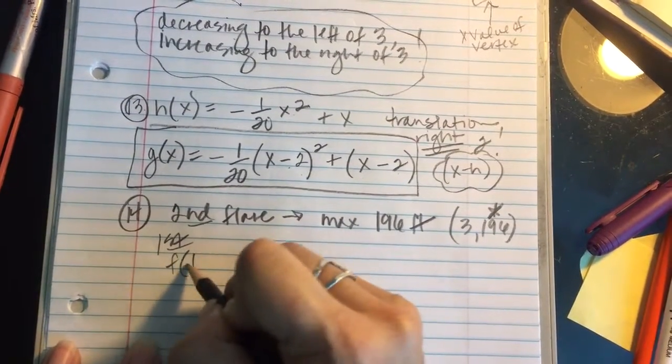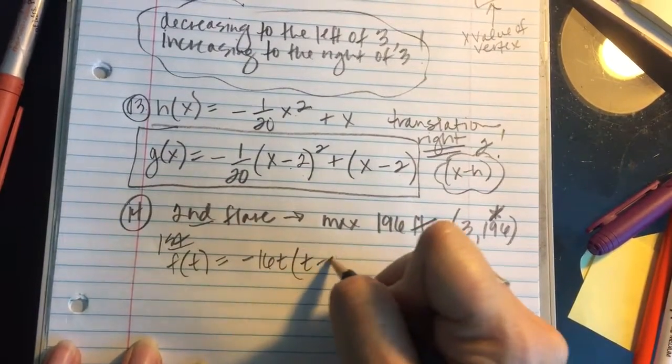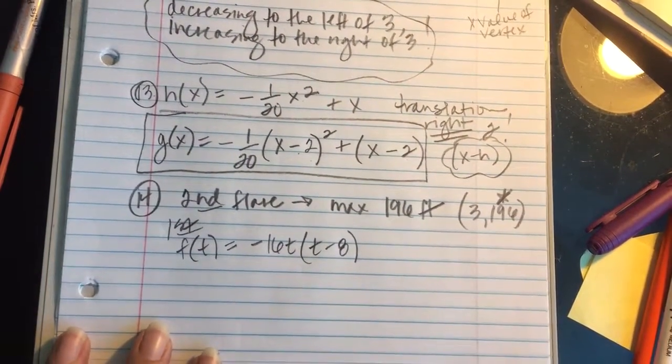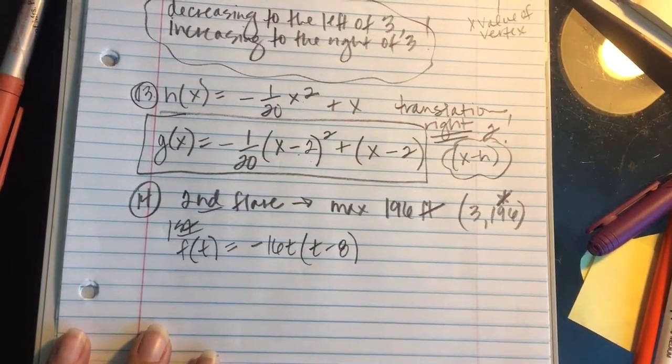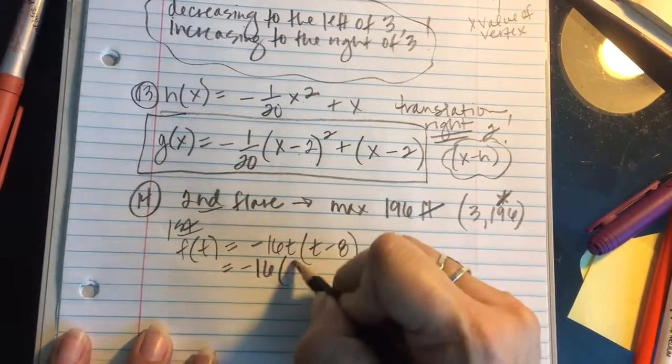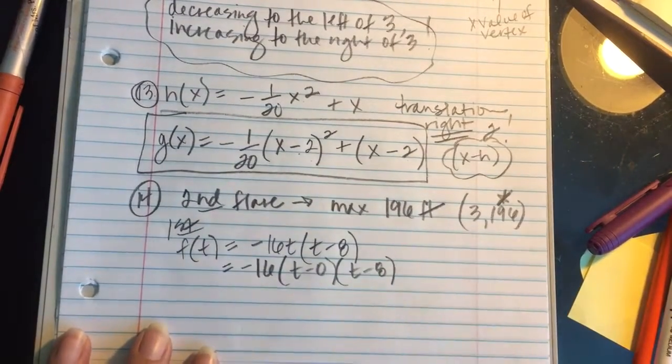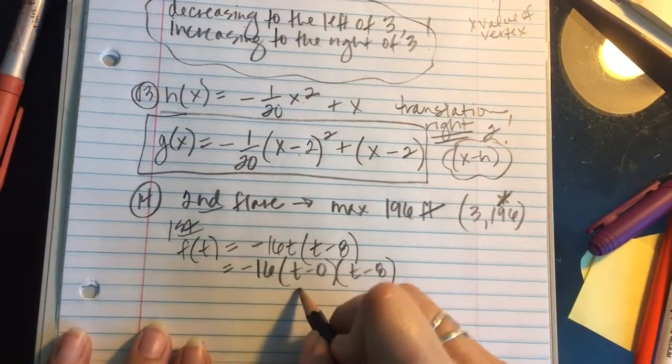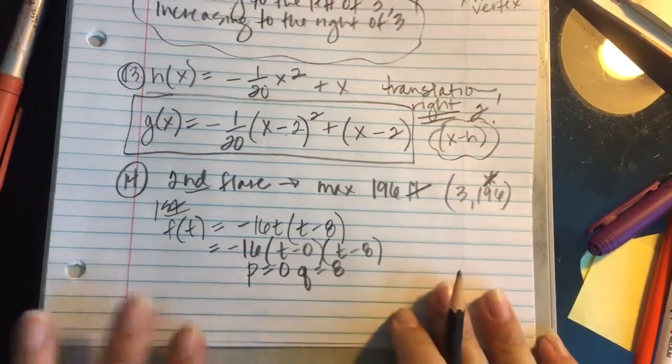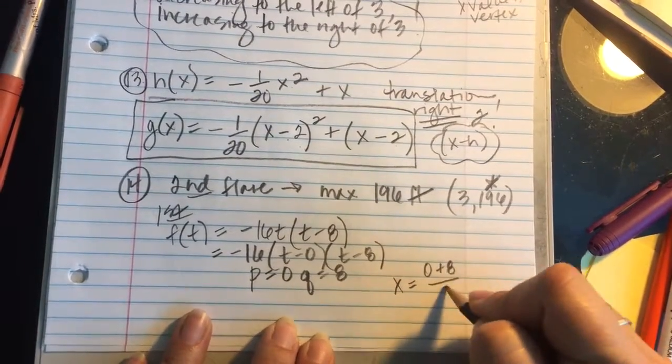So I've got f(t) = -16t(t - 8). And a couple things I'm going to do here. Let me change this over into the intercept form like I showed you before. t minus 0, t minus 8. So I'm going to get some x-intercepts out of this, p and q. And the reason I'm grabbing the x-intercepts is I know I can get the x value of the vertex by saying p plus q divided by 2.